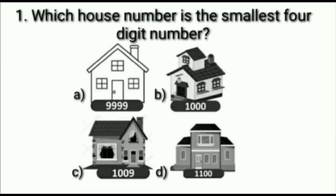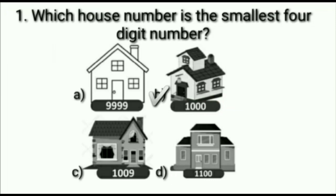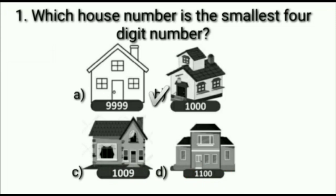Now let's check the given options. Option A has house number 9999 — not correct. Option B has house number 1000, which is the smallest 4-digit number, so this is correct and we put a tick on it. Option C has house number 1009 — not correct. Option D has house number 1100 — also not correct. So option B is correct.